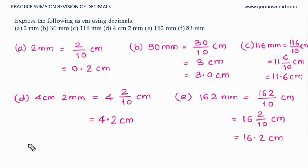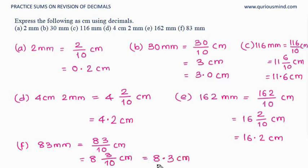And last one, F. 83 millimeters is equal to 83 divided by 10 centimeter, which is equal to 8, 3 upon 10 centimeter. That is 8 whole. After whole we get decimal point and 3 at the 10th place. 8.3 centimeter.